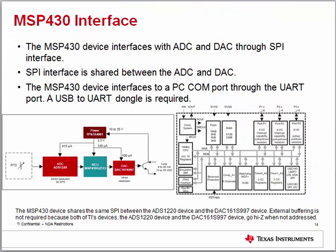The MSP430 in this application records raw ADC codes from the ADS1220 device corresponding to temperature readings, applies offset and gain calibration, converts ADC codes to resistance values, performs linear interpolation to overcome RTD non-linearity, converts temperature from the lookup table to a DAC current value, and then applies the equivalent code for the loop current to the DAC device via SPI.